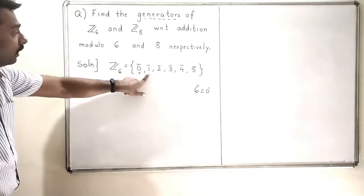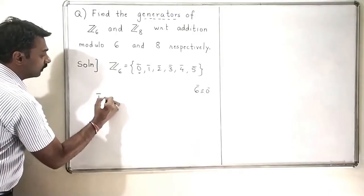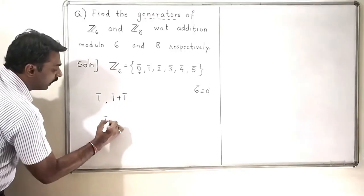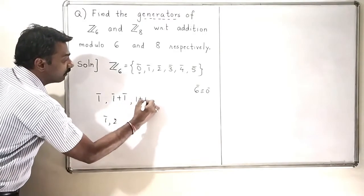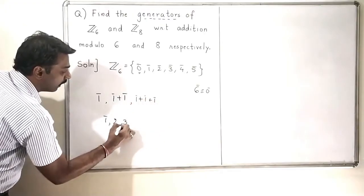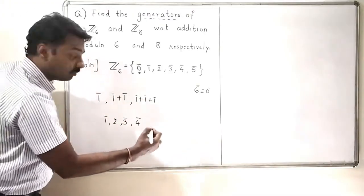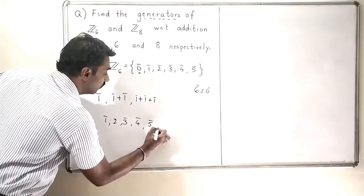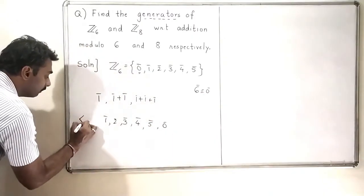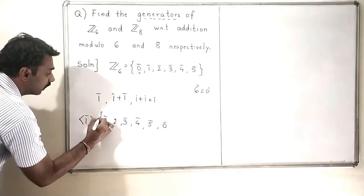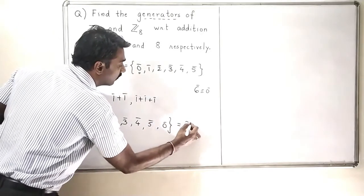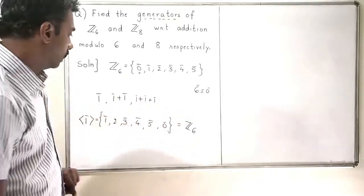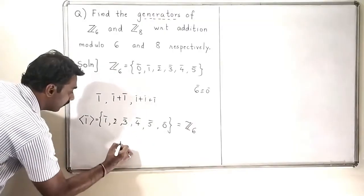If I try that with 1 bar: the first element is 1 bar. Then 1 bar plus 1 bar is 2 bar. Adding 1 bar three times gives 3 bar, four times gives 4 bar, five times gives 5 bar, and when I add 1 bar six times I get 0 bar. So 1 bar generates all elements of Z6 — 1 bar is a generator.